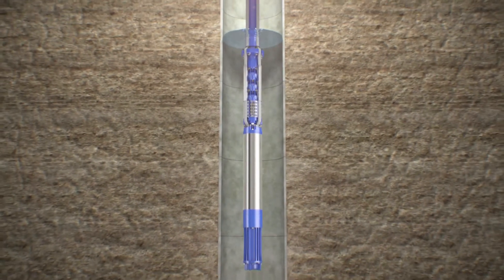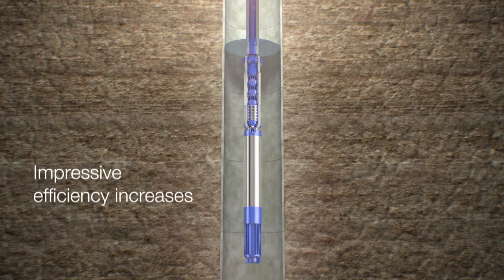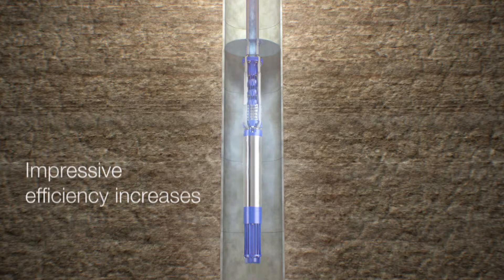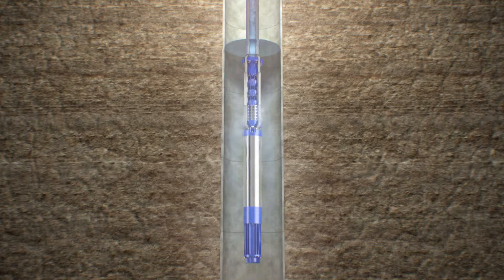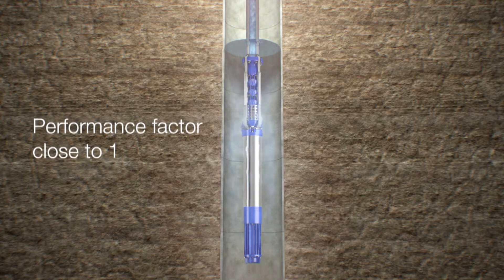Existing asynchronous motors thus become permanent magnet synchronous motors, with impressive efficiency increases of 4% on average and in the partial load ranges, as much as 7% at levels above 90%. In addition, IPM motors have a performance factor close to 1. Current compensation thereby becomes redundant.